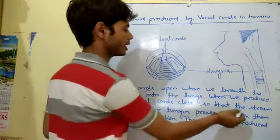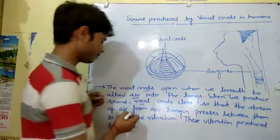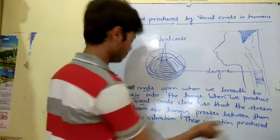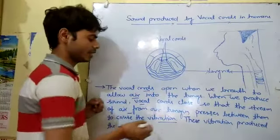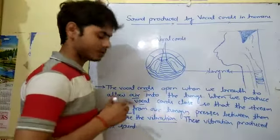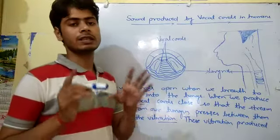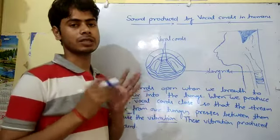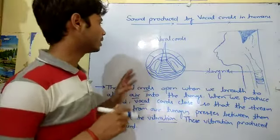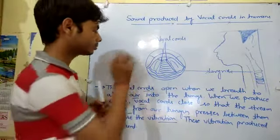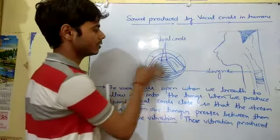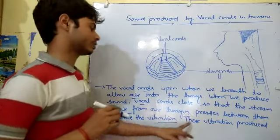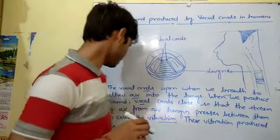When we produce sound, the vocal cords close, so the stream of air from our lungs presses between them to cause vibration. In the previous class we discussed that every vibrating object produces sound. So when vibration occurs in the vocal cords, sound is produced.